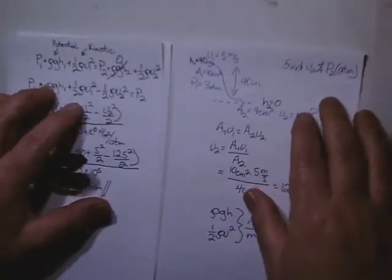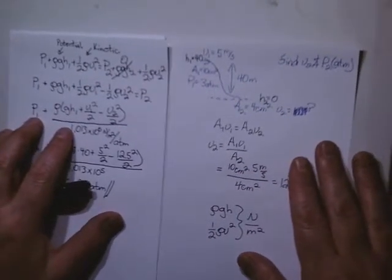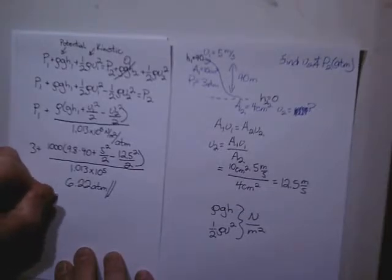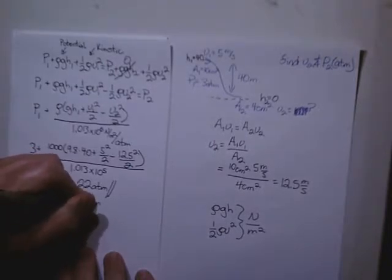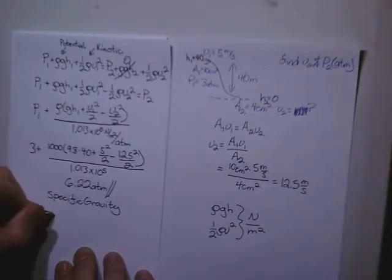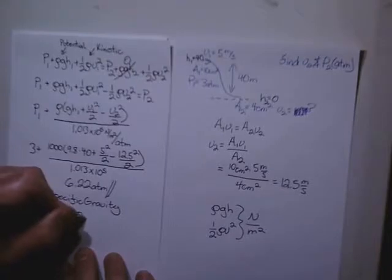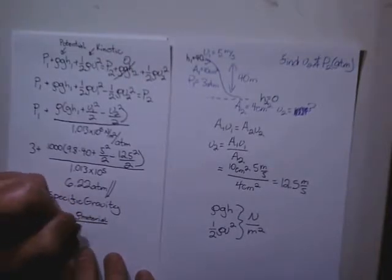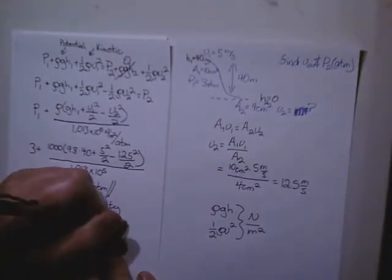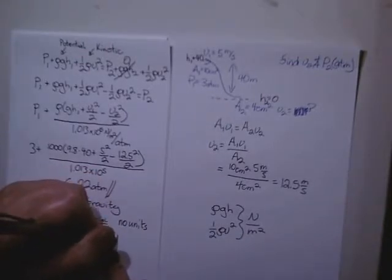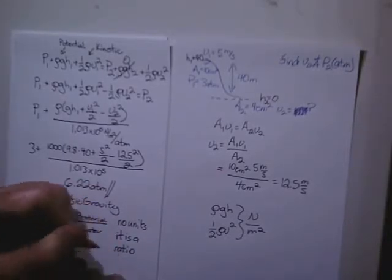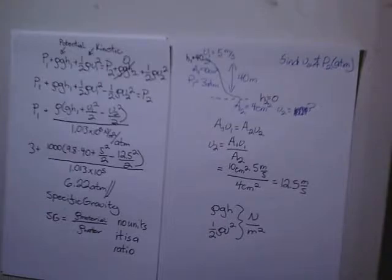And before we move on, we went through those pretty quickly. The one thing that I do want to clarify is the term specific gravity. And that specific gravity is simply a ratio. It equals to the density of the material divided by the density of water. And there are no units because it is a ratio. And so when they say specific gravity is 1.2, that means the specific or the density of the material is 1.2 times that of water.